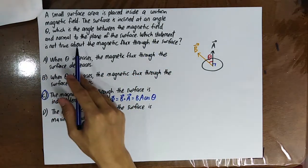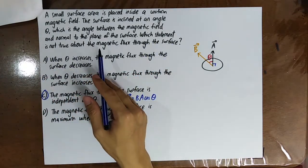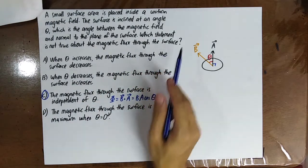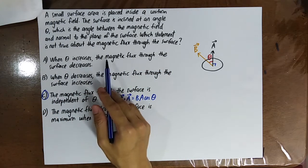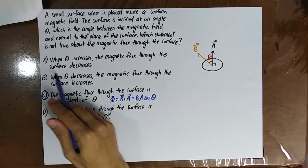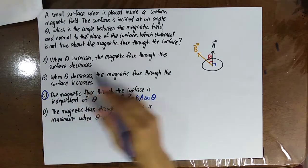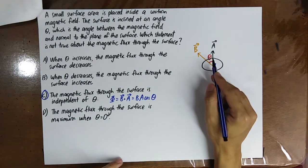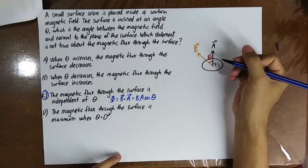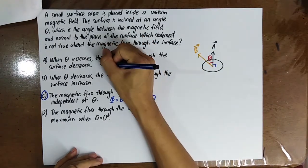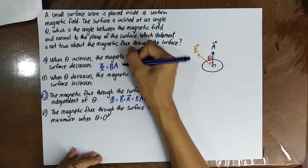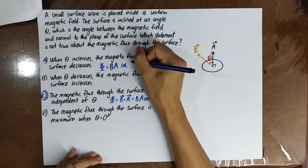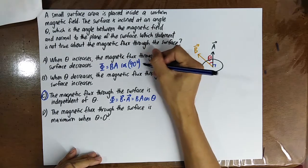Which statement is not true about the magnetic flux through the surface? Statement A: when theta increases, the magnetic flux through the surface decreases. When theta is 90 degrees, phi equals B A cos 90 degrees equals 0. So when theta increases, magnetic flux decreases — this statement is true.